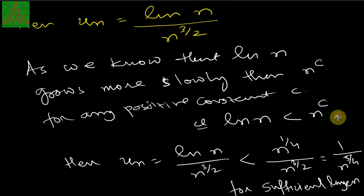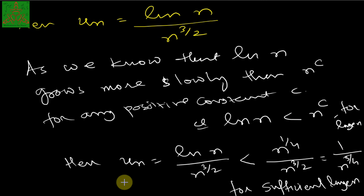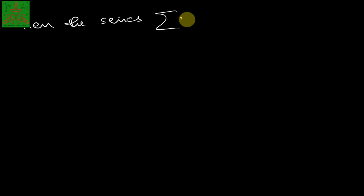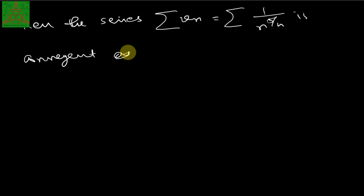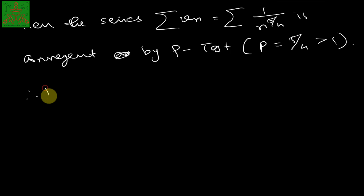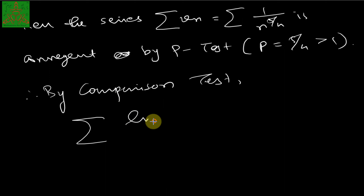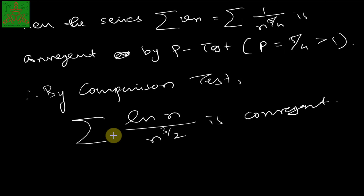Taking v_n = 1/n^(5/4), by the comparison test, since summation of 1/n^(5/4) is convergent (p = 5/4 > 1 by the p-series test), and u_n < v_n for sufficiently large n, we conclude that summation of ln(n)/n^(3/2) is also convergent.